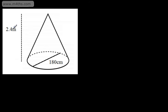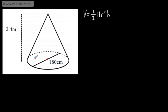For the next example, we've got 2.4 meters as the perpendicular height, and this time we've got a diameter of 180 centimeters. The volume is one-third pi r squared h. The first thing we need to do is find the base radius. If the diameter is 180 centimeters, we need to halve that, giving us 90 centimeters. Converting to meters, that's 0.9 meters. Alternatively, you could convert the height to 240 centimeters and work in centimeters throughout, as long as you're consistent.